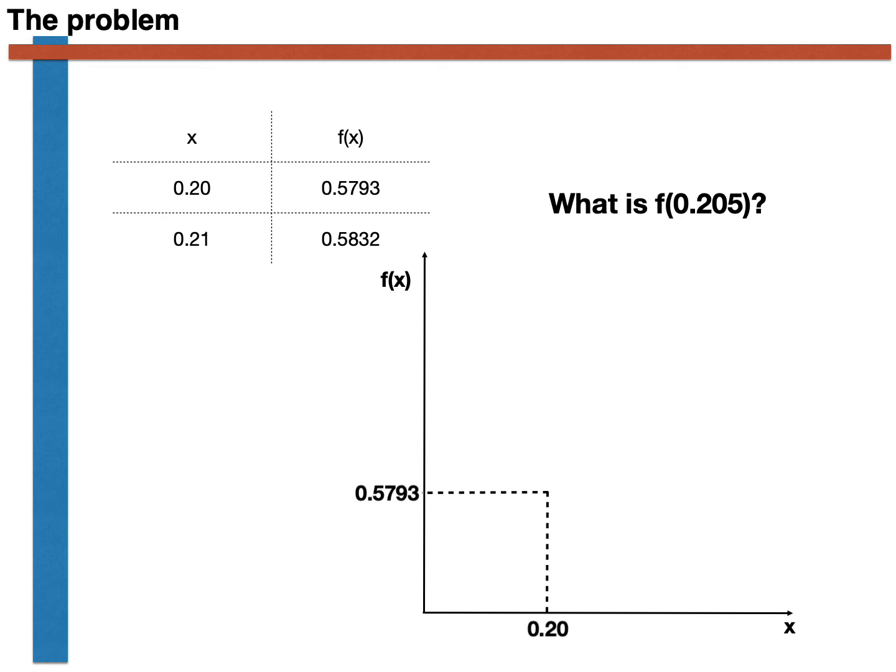Turning to the other set of values in our table, we can place the value of 0.21 here on the x-axis. The table then tells us that f(x) is equal to 0.5832 when x is equal to 0.21. And the function must, therefore, also pass through the point at which these two new horizontal and vertical dashed lines meet.